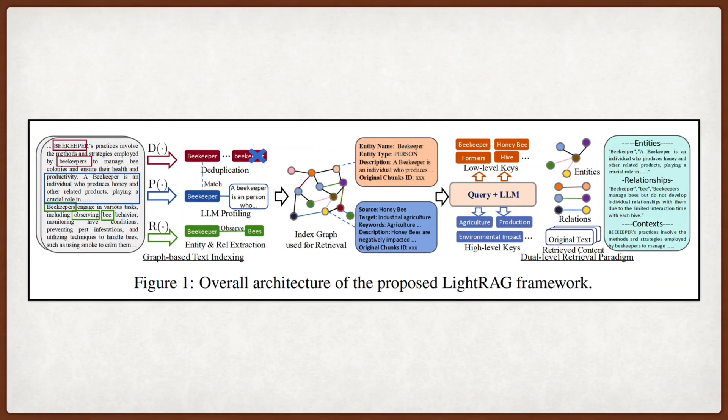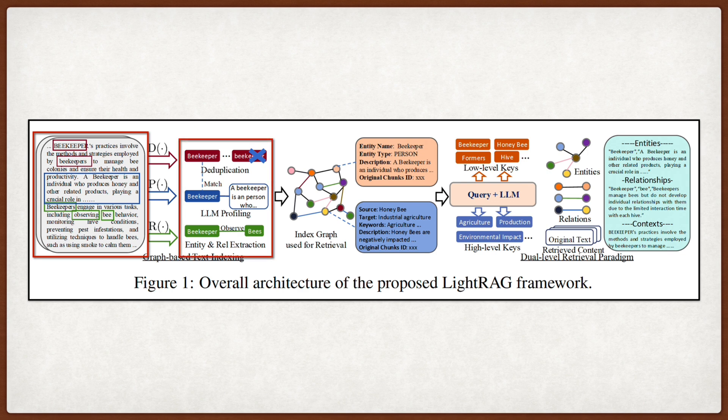Now let's look at the indexing process, which they call Graph-Based Text Indexing. They start by segmenting documents into chunks and using an LLM to extract entities and their relationships. The system doesn't just create a graph structure, but performs profiling to generate key-value pairs for each node and edge, where the key is the name and the value is a text summary of the relevant snippets.